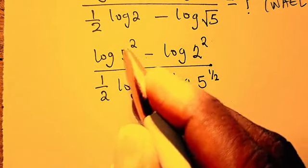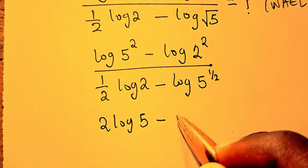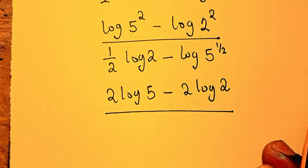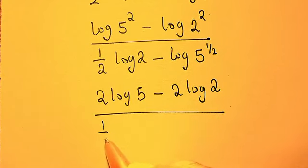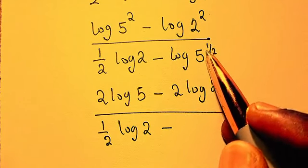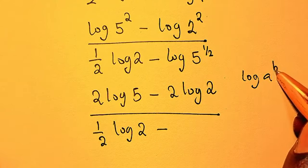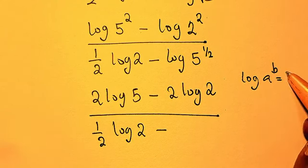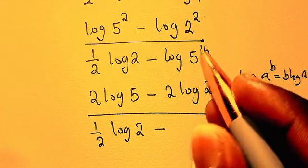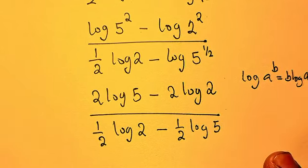write this as: these two we come down, we have 2 log 5 minus 2 log 2 divided by 1 over 2 log 2 then minus - now look at this one, if you remember you have log a to the power of b, so this will give us b log a. So now we use it here: 1 over 2 we come down, here we have log 5.